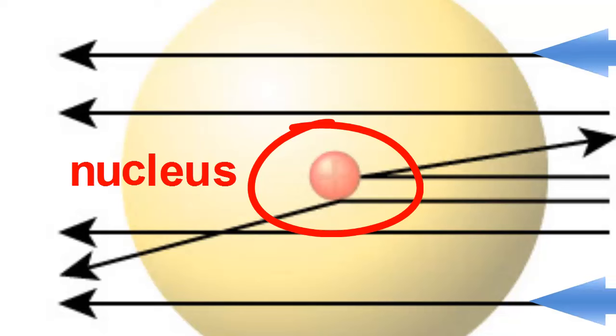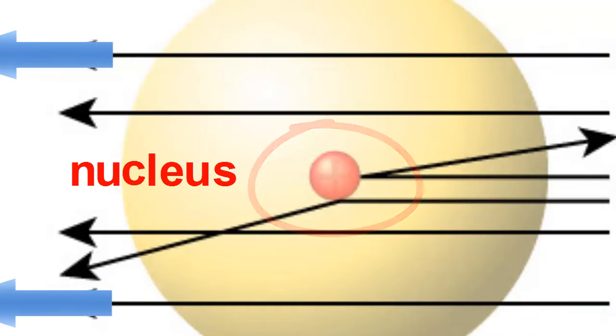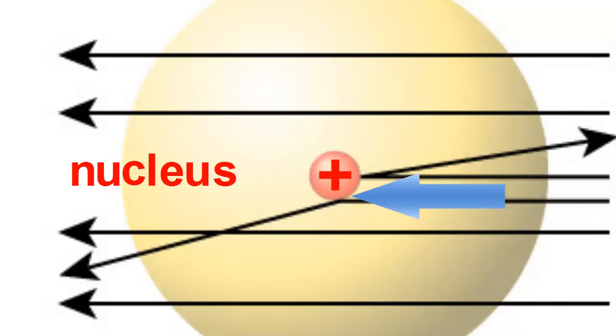Because the nucleus was so small, most alpha particles didn't even come close and completely missed them. They went straight through. If some went close to the nucleus, its positive charge would cause repulsion and bend them off course. If an alpha particle made an occasional direct hit, it would bounce right back from where it came, because the nucleus was much, much heavier than the alpha particle itself.